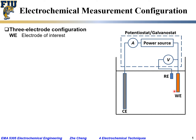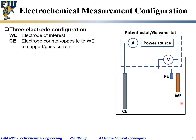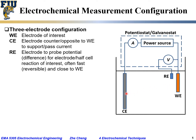On or near the working electrode is where the electrochemical reaction of interest is happening. CE stands for counter electrode — it's the electrode counter or opposite to the working electrode, and the CE is needed to support or pass the current through the electrochemical cell.